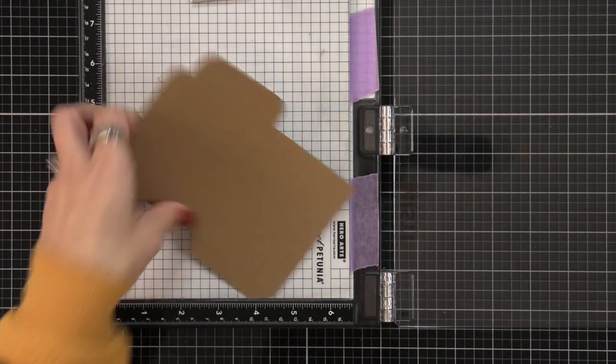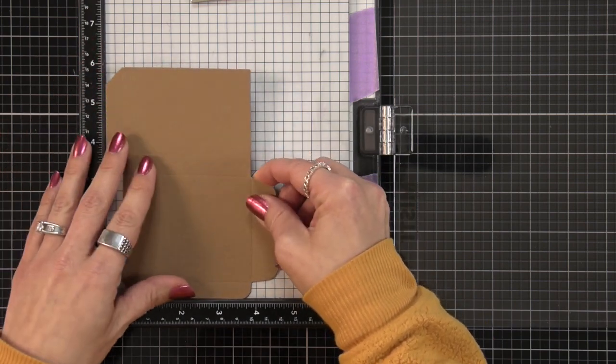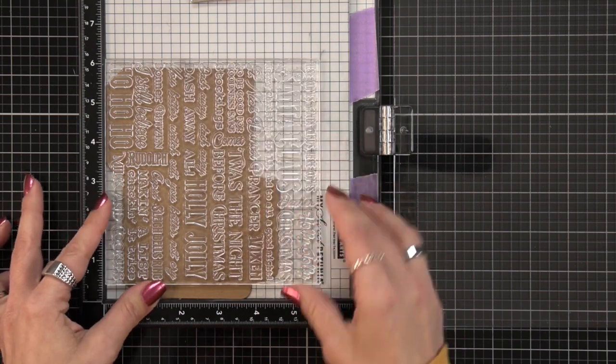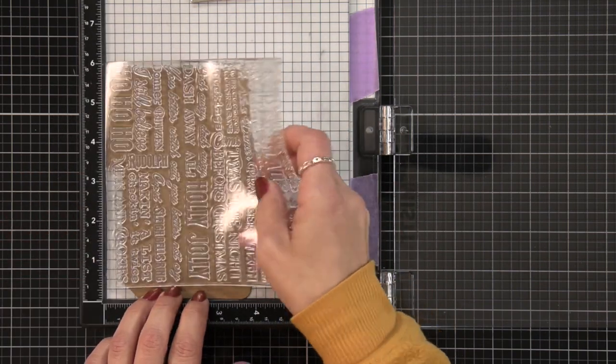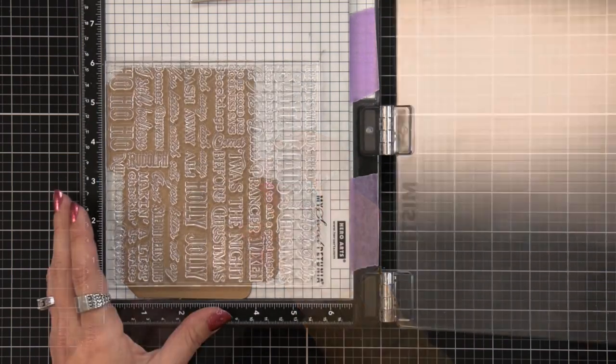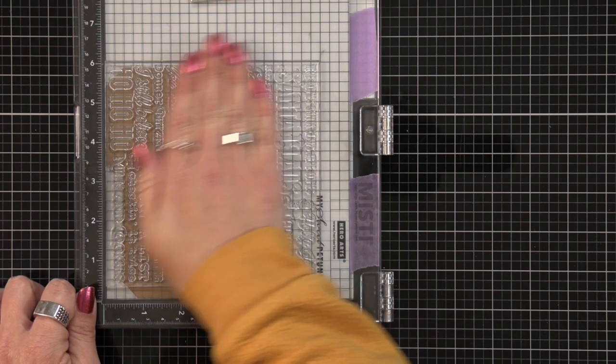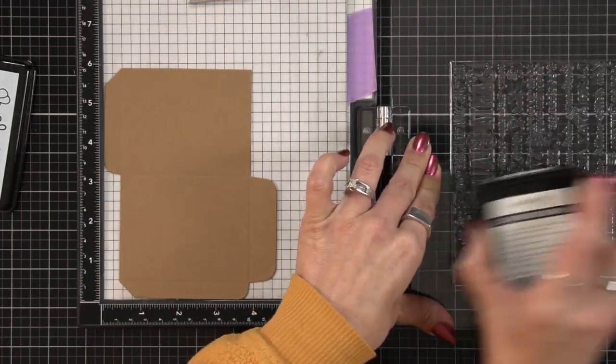I'm going to use the Holly Jolly background stamp. I'm going to place this in my MISTI tool but I added some repositionable tape to it first so it doesn't pick up with the stamp set. Sometimes the cardstock can stick to the clear stamp set so that should stay down and then I'm placing my background stamp in the way that I want it to look on the front of this holder.